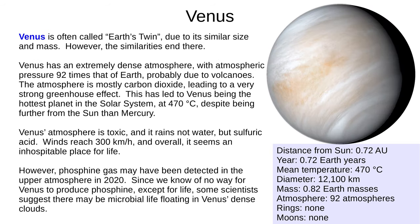Venus is often called Earth's twin due to its similar size and mass, but the similarities end there. Venus has an extremely dense atmosphere, with surface atmospheric pressure 92 times that of Earth, probably from volcanic eruptions. The atmosphere is mostly carbon dioxide, causing a very strong greenhouse effect, which has made Venus the hottest planet in the solar system — even hotter than Mercury's daytime, despite being further from the Sun. Venus's atmosphere is toxic to Earth-based life in many ways, the rain is sulfuric acid, and wind can reach 300 km per hour. However, there have been occasional indications of possible life — phosphine gas was detected in the atmosphere, leading scientists to suggest microbes might be floating in the dense clouds, though further analysis indicates this detection may have been faulty.